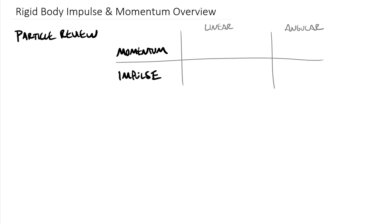Hopefully you remember that linear momentum for particles is mass times the velocity vector. For particles, we didn't need to worry about whether this is the velocity of the center or anywhere else, because if something is translating, the velocity of every point in that body is exactly the same. And furthermore, if we assume it's a particle, we're assuming all mass is concentrated at one location. For angular momentum, we use R cross MV. This was our equation for particle angular momentum.